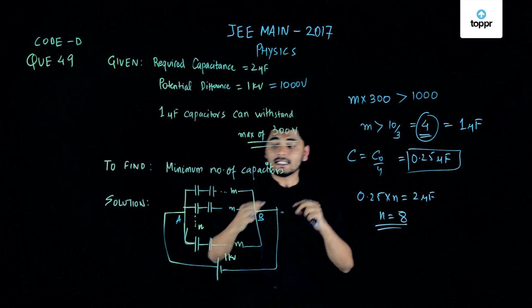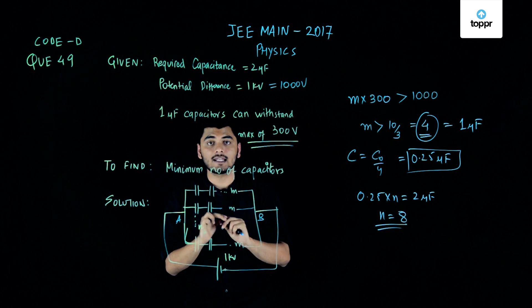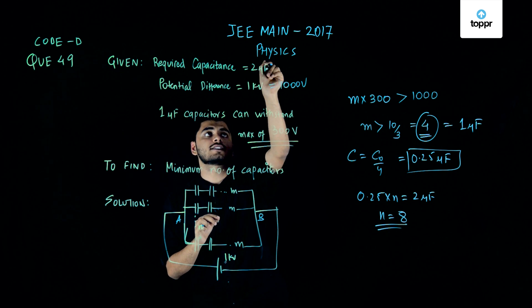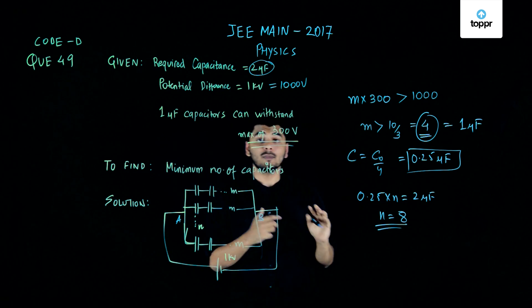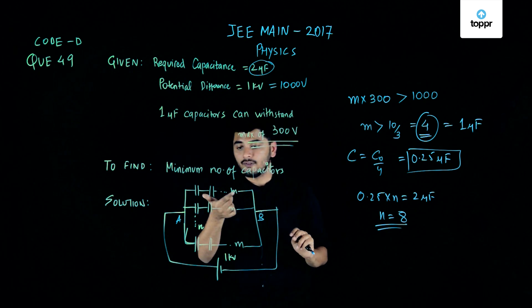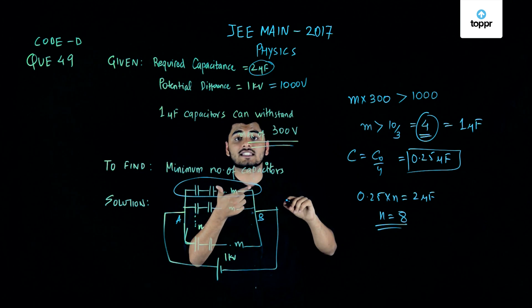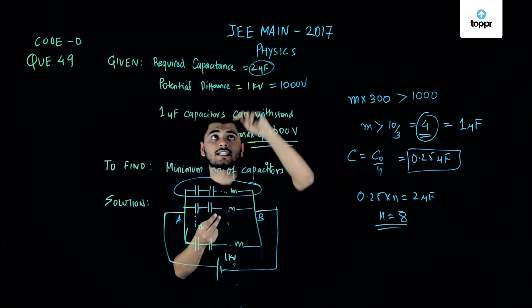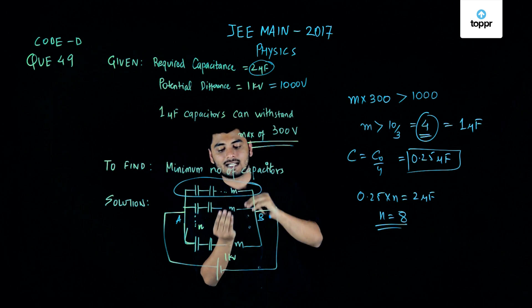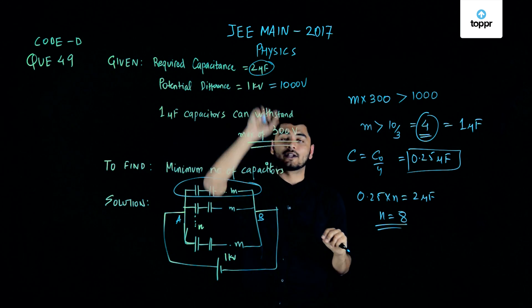So 8 such branches need to be kept in parallel in order to achieve a capacitance of 2 microfarads. So the problem was broken down into two things. First I calculated the maximum potential difference across each branch which it can withstand, and then I needed to find out the total capacitance so I just multiplied that by number of n in order to find 2 microfarads.